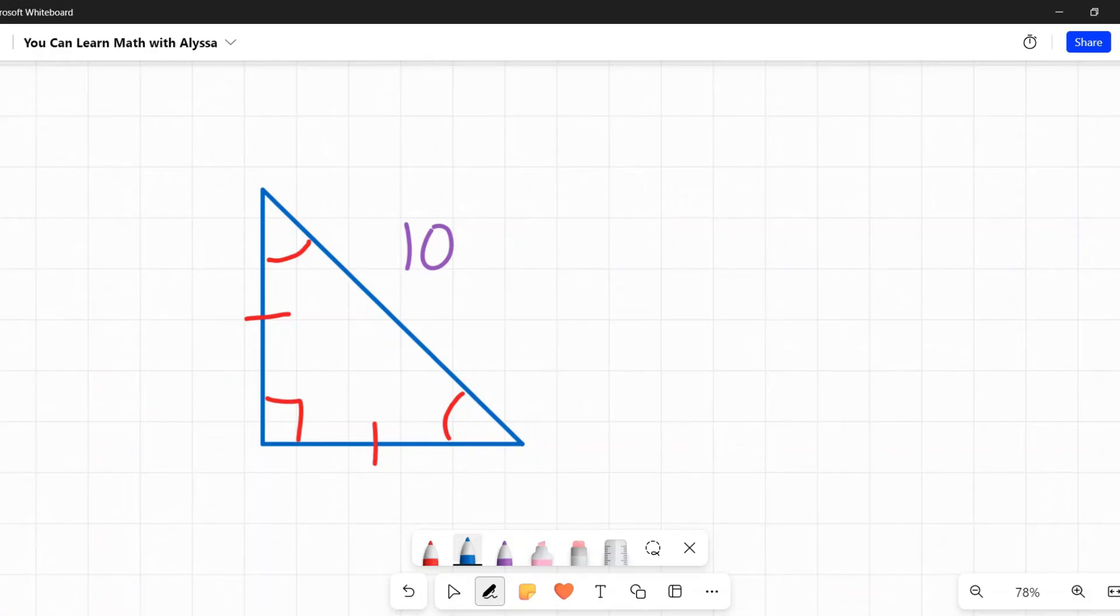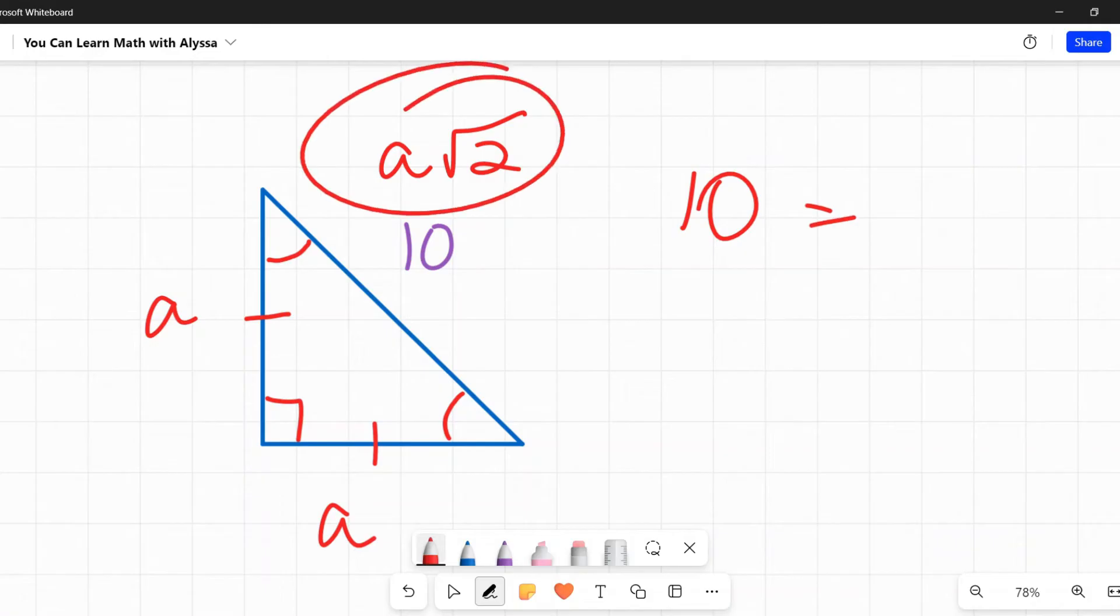Since this side would be equal to the number a, this side also the number a, and this side a times the square root of two, to figure out what a is, we would need to say 10 = a√2.